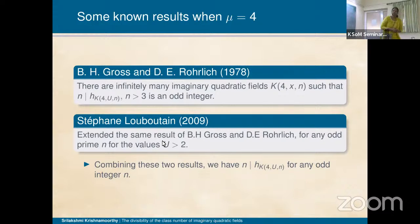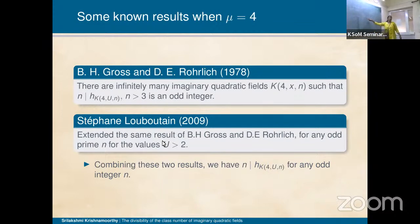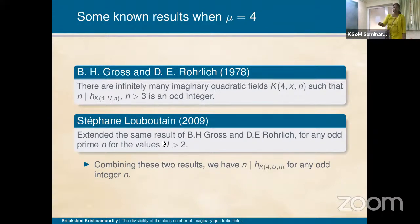There is a clarification about the parameters: there are three parameters involved — μ, m, and y. The field is Q of square root of 1 minus μ · m^y. Here m is u·n and u is any natural number strictly greater than 1 in the first result. Louboutin extended the same result for any odd prime n, because n = 3 was missing in the Gross-Rohrlich result. Now we have the divisibility for any integer.